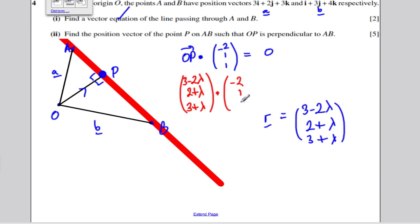I'm going to dot that with the direction minus 2, 1, 1, and I know that's got to be equal to 0.